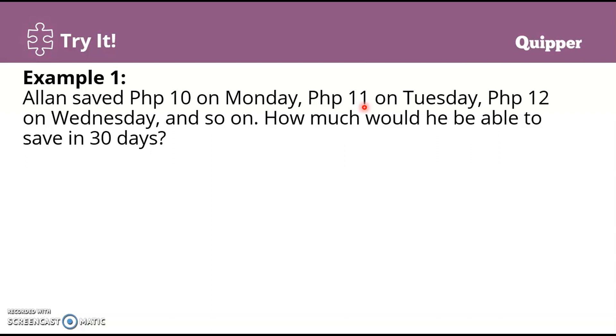So 10 pesos day one, 11 pesos day two, day three 12 pesos, day four 13 pesos, and so on. In this case, since we don't know how much he'll save on the 30th day, we don't know the last term. Therefore, we are going to use the second formula for arithmetic series, which is S_n = n/2[2a₁ + (n-1)d].